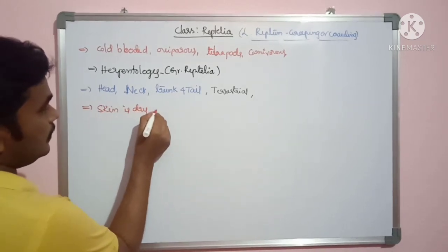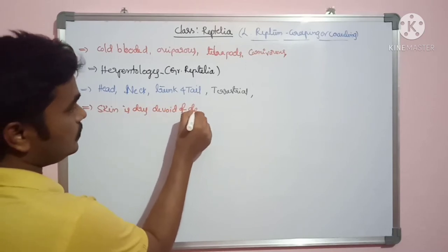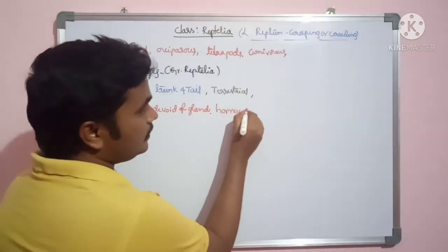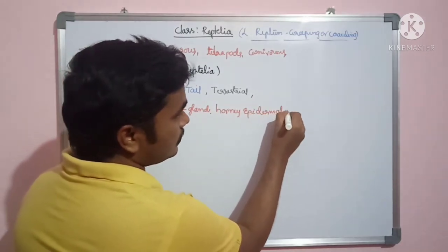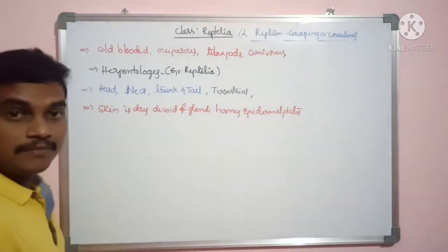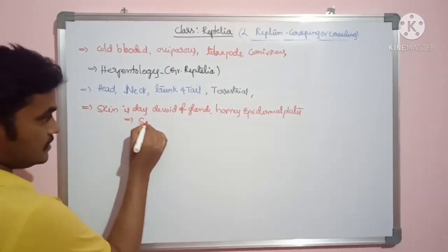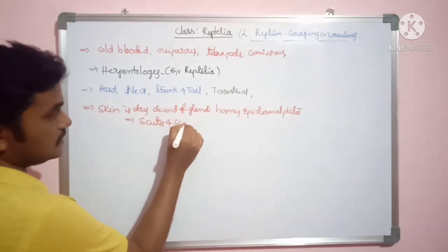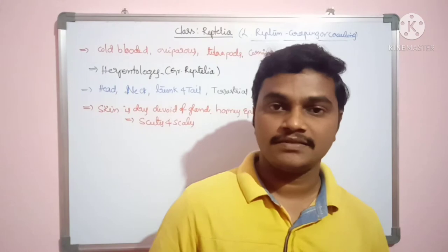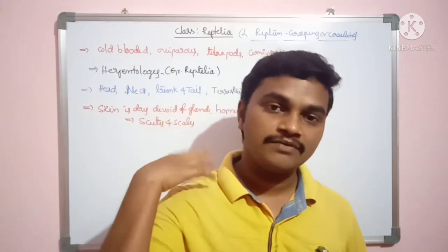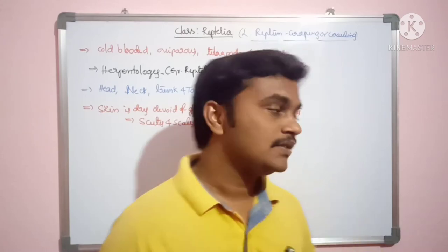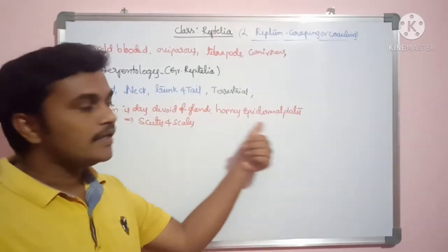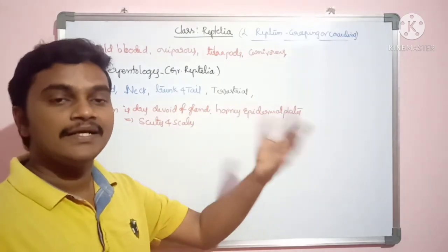If you see the exoskeleton, the skin is dry and devoid of glands — there are no glands in the skin. The skin contains horny epidermal plates, scales, and scutes. The skin of amphibia is glandular, but in reptilia it is devoid of glands, which is why it is dry.